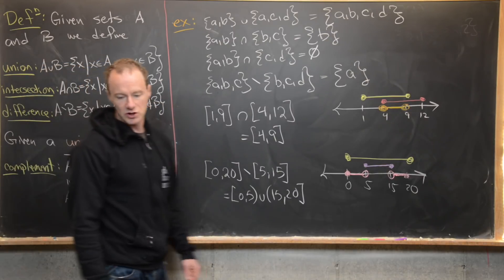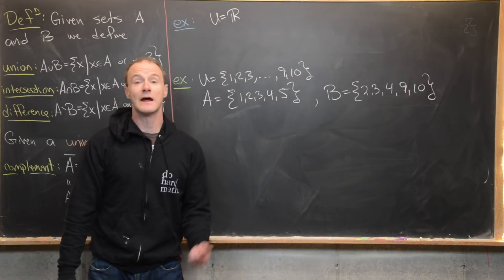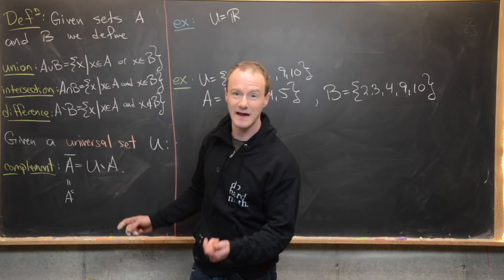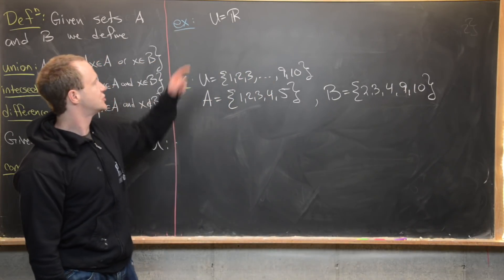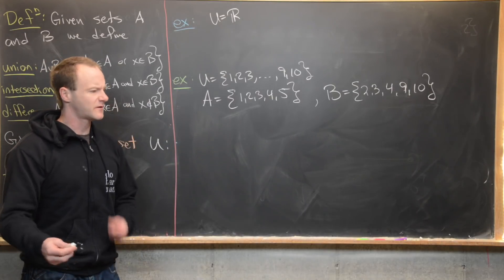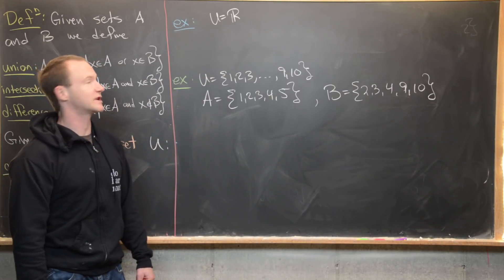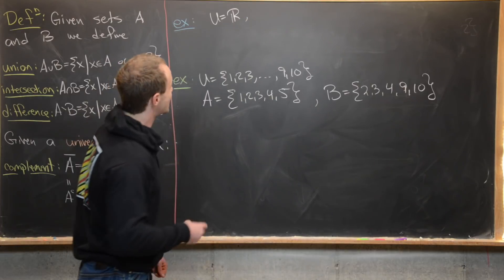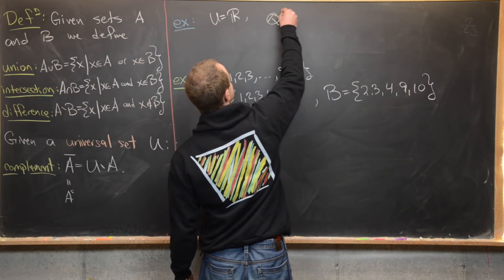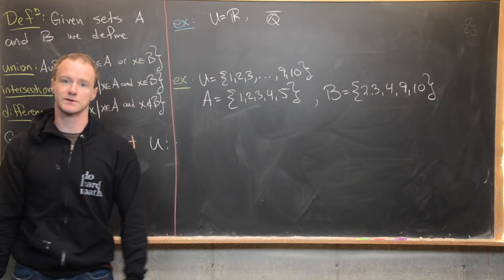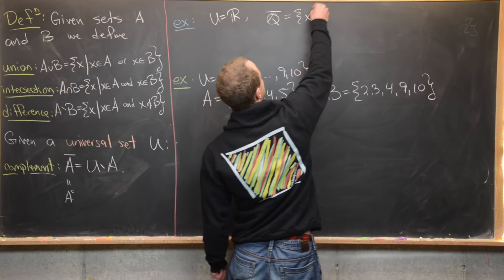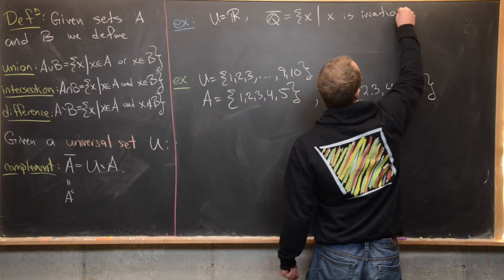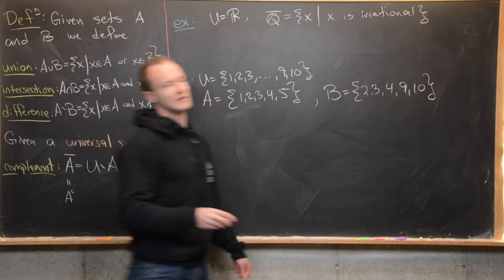Now let's look at examples involving complements. To make the complement well-defined, we need a universal set. A natural setting from calculus is taking the universal set to be the real numbers ℝ. In that case, the complement of the rational numbers Q is the set of all irrational numbers — we have a word for 'not rational,' and that's irrational.